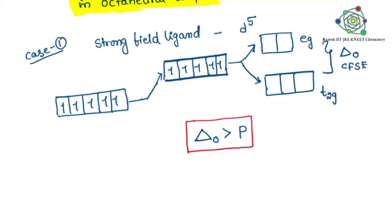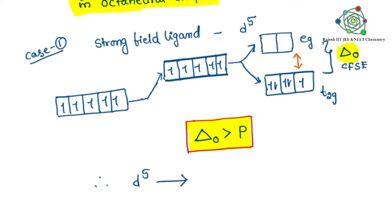So how does the d5 electronic configuration change? The gap between Eg and T2g is higher, so these electrons are not going to the Eg orbitals. All five electrons remain in T2g only, involving in pairing. You can see two electrons here, two here, and one here — that gives two pairs and one single electron — because the gap between Eg and T2g is very high due to the strong field ligand.